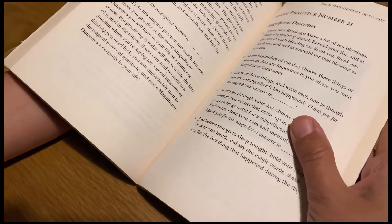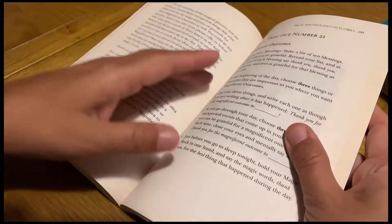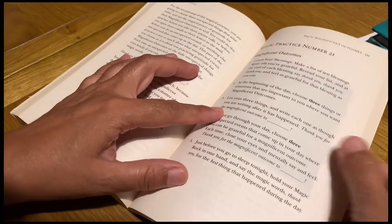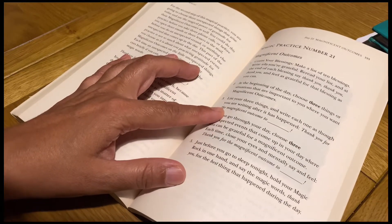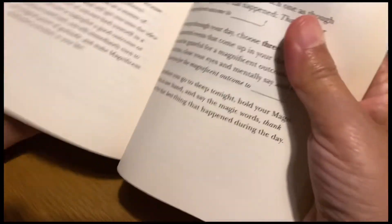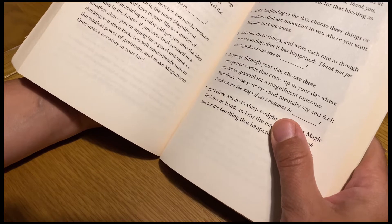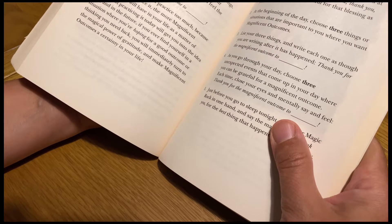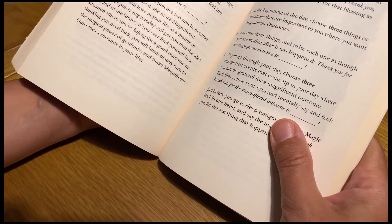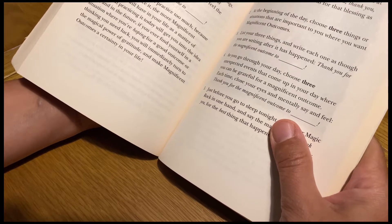Make the list of 10 things you are grateful for, reread them, and put your hand on your heart just like I tell you, and feel the gratitude for these 10 blessings you wrote. And at the beginning of every day, especially for this practice, choose three things or the situations that are important to you.